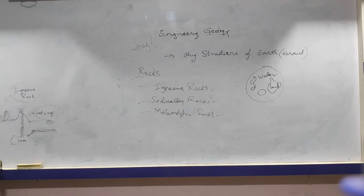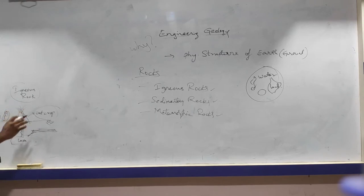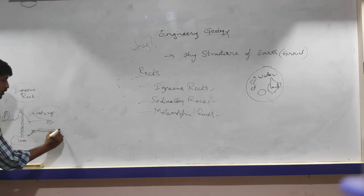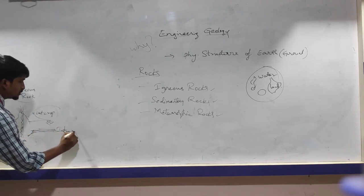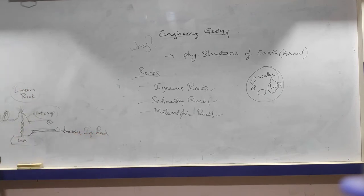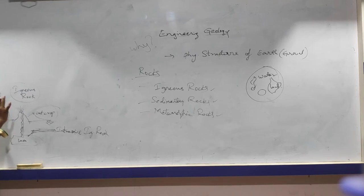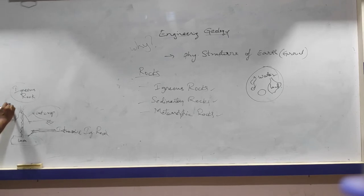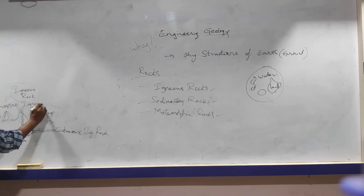Wherever there are gaps in between the strata, wherever weaker sections, weaker joints and layers exist, lava will penetrate and form igneous rocks — we call these intrusive igneous rocks. Whatever igneous rocks are formed outside the ground level, above the earth's surface, we call them extrusive igneous rocks.